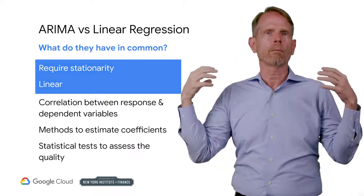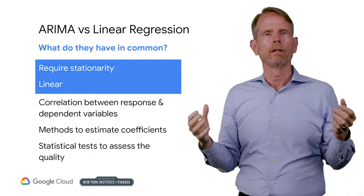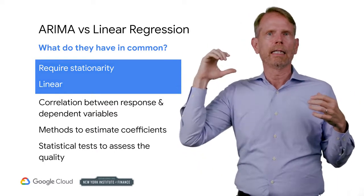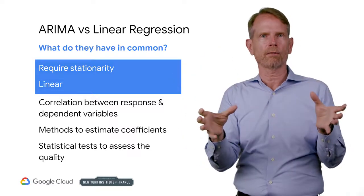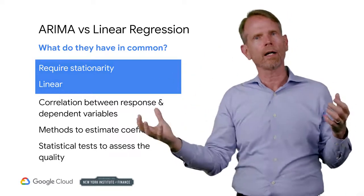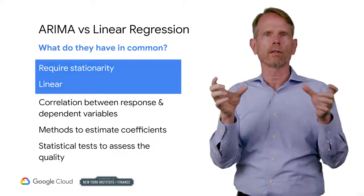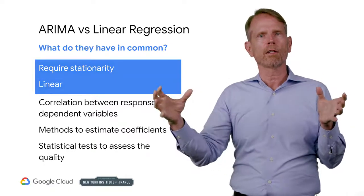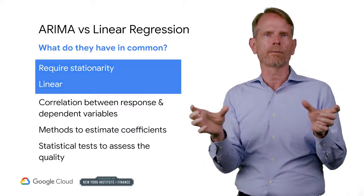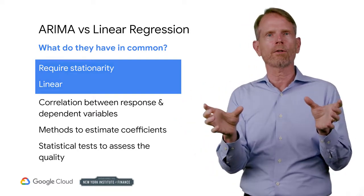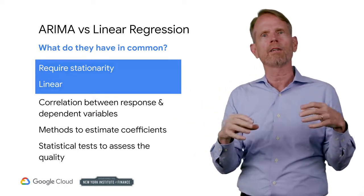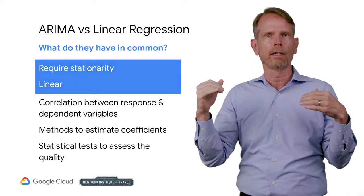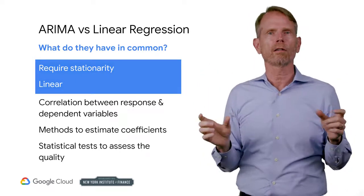Let's talk about what both models have in common. First, both models require the data to be stationary. In linear regression, you have to use stationary variables. If the variables are non-stationary, then you violate the assumptions of the linear regression model. You would need to look for related variables that preserve the stationarity condition. In ARIMA modeling, you also have to use stationary variables. If the variables are non-stationary, then you have to take differences until the data is stationary. Now, you see why stationarity is so important.